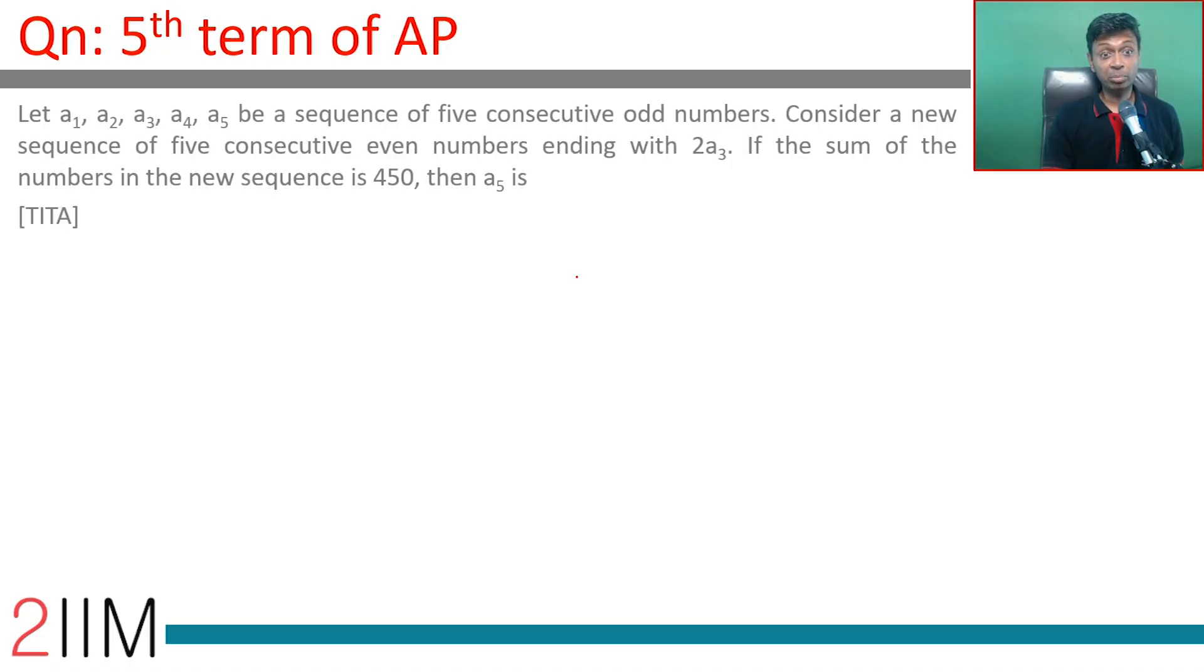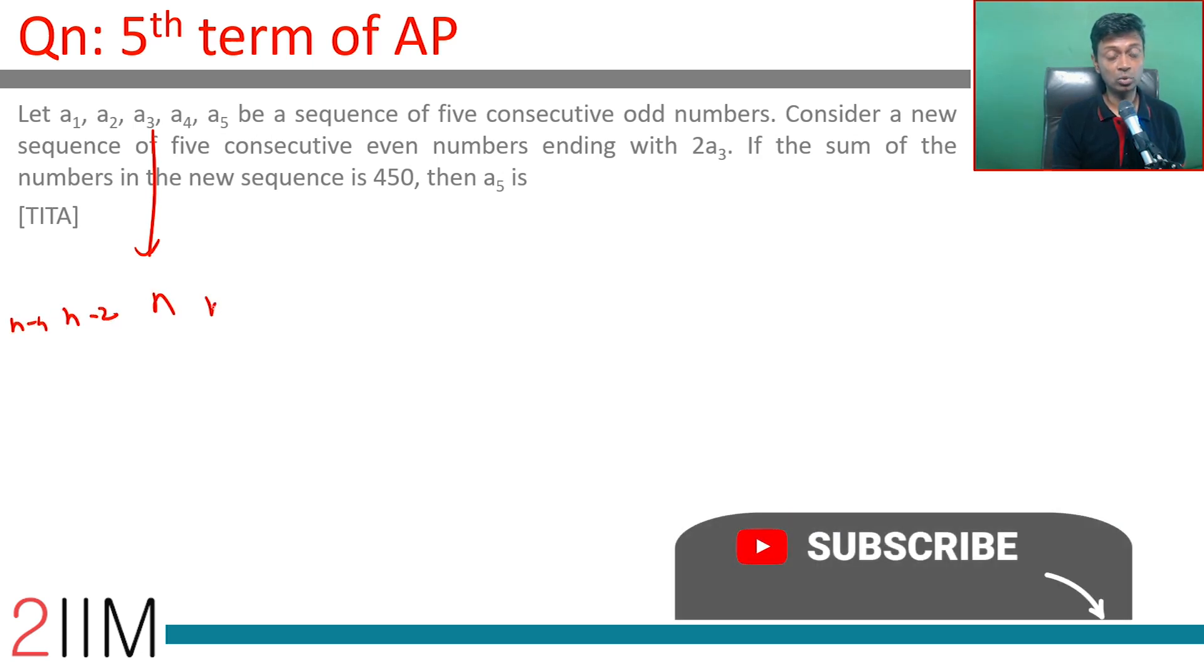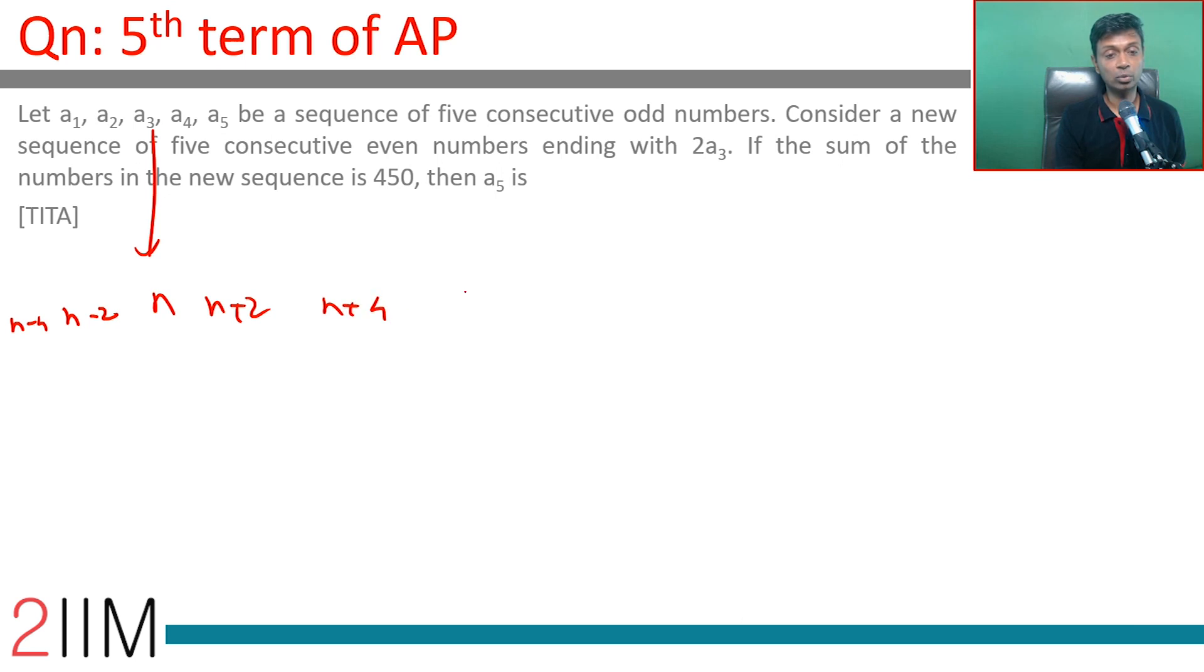Let a1, a2, a3, a4, a5 be a sequence of five consecutive odd numbers. So a1, a2, a3 - I'm going to call this as n, a2 as n minus 2, a1 as n minus 4, a4 as n plus 2, a5 as n plus 4.